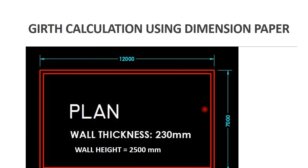Now we have this simple plan. It's a very basic plan which is not a cavity wall but just a solid wall measuring 12,000 by 7,000 mm. The wall thickness is 230 mm and the height is 2,500 mm. We want to determine what will be the total length of this wall.